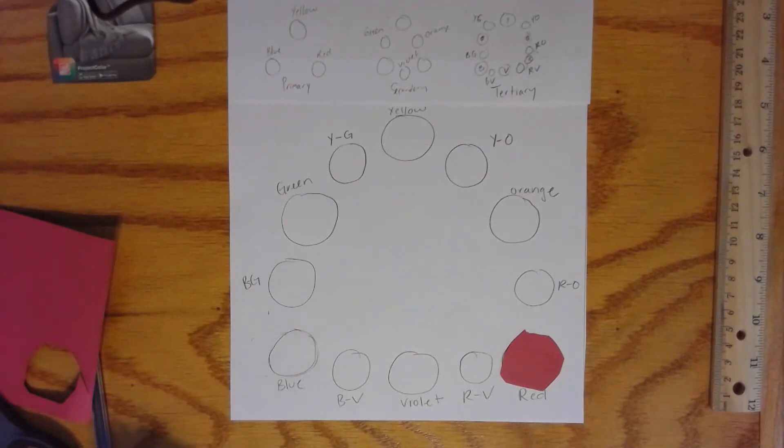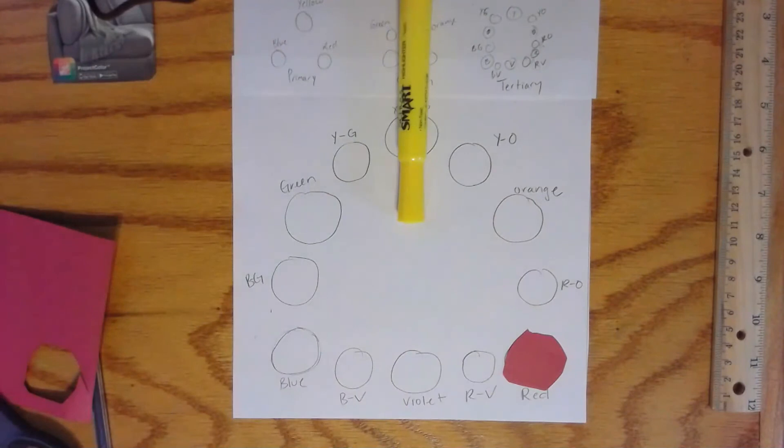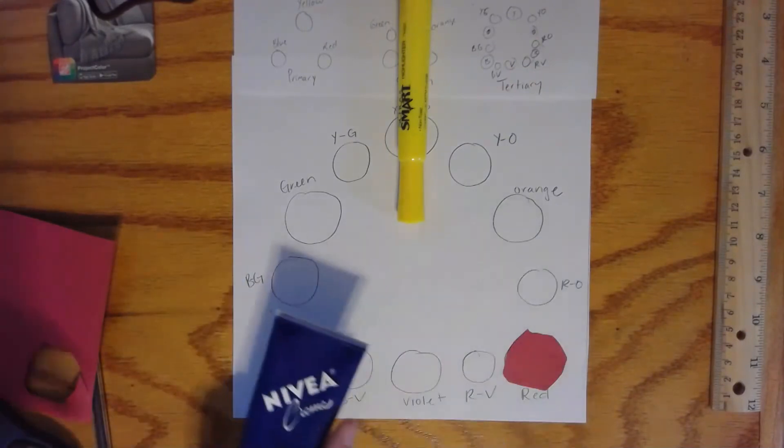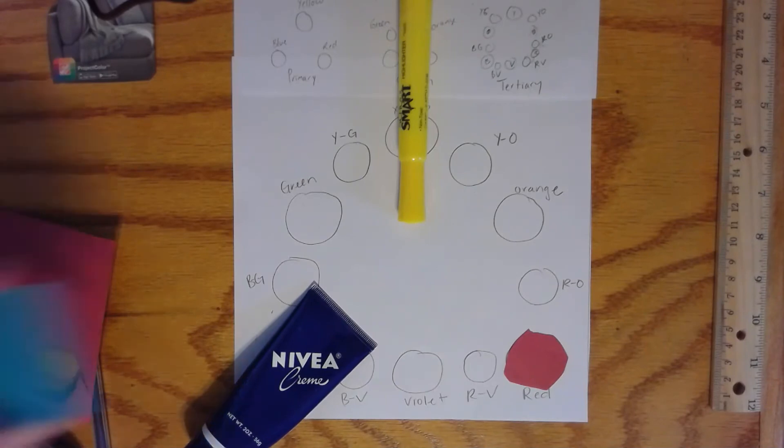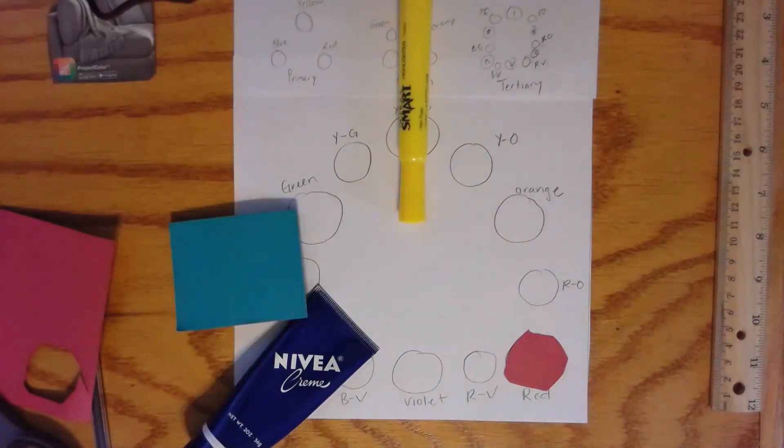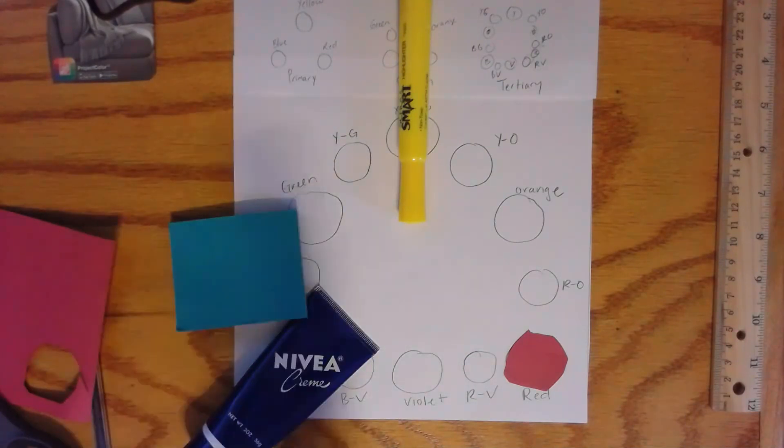Or another fun thing is to actually get objects from your house that are those colors. So I have a yellow highlighter, I might put that down. Or I have a blue hand cream, I could put that down. Or I have blue green post-it notes, I could use that. Or maybe I have a plant, I could put the plant down. And I could just find objects that fit those categories and then take my picture and send it in.